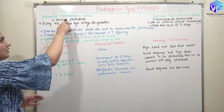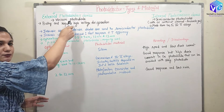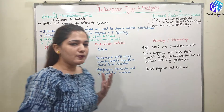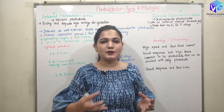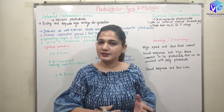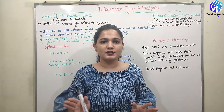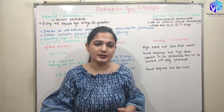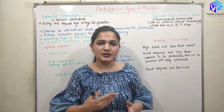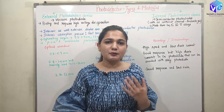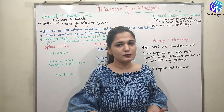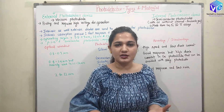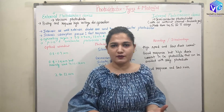For example, external photodetectors are the vacuum tube type. They are bulky and require high voltage for operation. Because they are bulky, they cannot be used in a very small device — they have to be placed separately and externally. This is the reason they are called external photodetector devices. They also use high voltage, so the power requirement would be high, which is not feasible for low-cost communication.